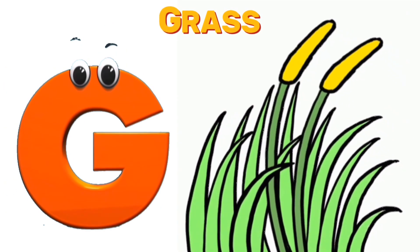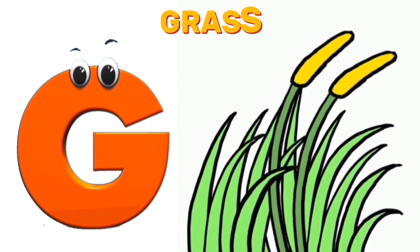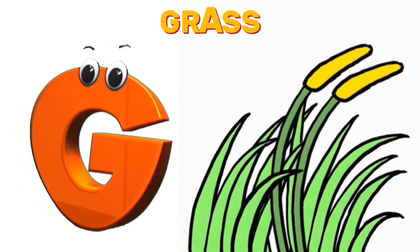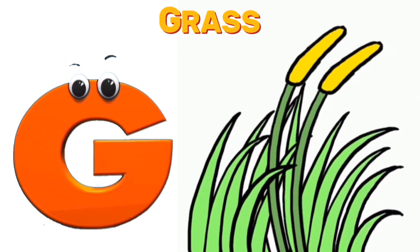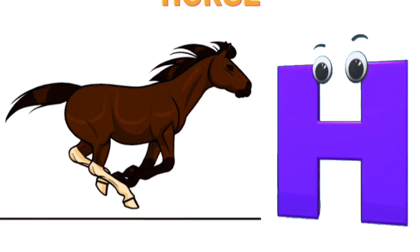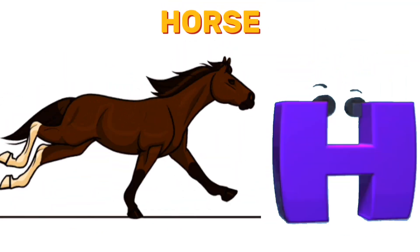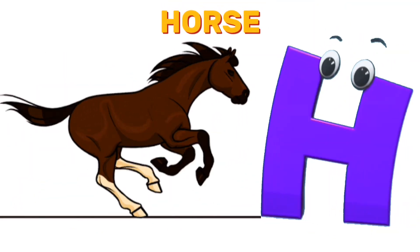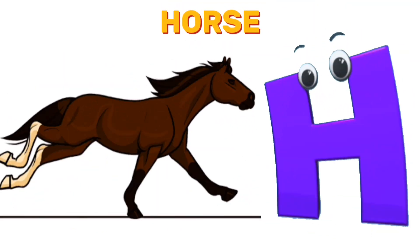G is for grass. G, g, grass. H is for horse. H, h, horse.